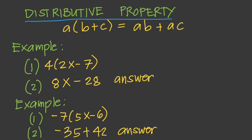To get rid of unwanted parentheses, we use the distributive property. For an expression a times (b plus c), we distribute a to each term inside the parentheses: a times b gives ab, then copy the operator sign plus, and a times c gives ac. So a(b + c) = ab + ac.